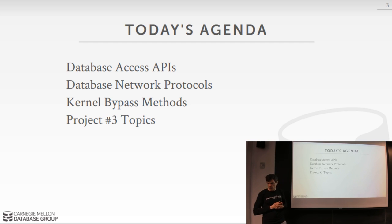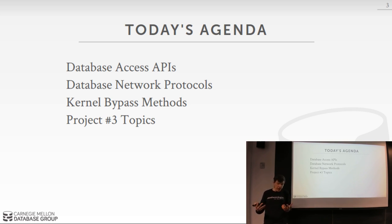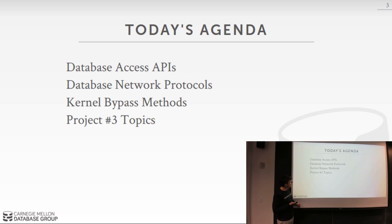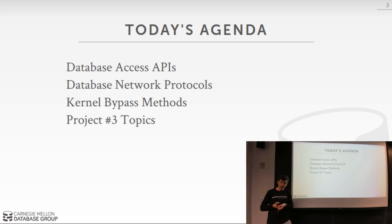For today's class the focus is on the networking protocol — how do we have our client interact with the database, send it messages, and get back data. We'll start by talking about database access APIs, then expand to what the actual network protocols look like from the paper you read, and finish with optimizations to minimize operating system overhead for sending network messages — these are called kernel bypass methods.